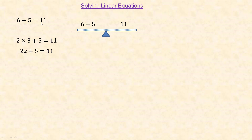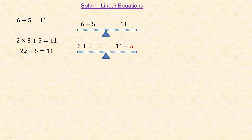Going back to 6 plus 5 equals 11: if I put 6 plus 5 on one side and 11 on the other, it's balanced because both sides have a value of 11. Now if I subtracted 5 from both sides, I'm doing the same thing to both sides — 11 minus 5 is 6 on the left and 11 minus 5 is 6 on the right. It's still balanced.